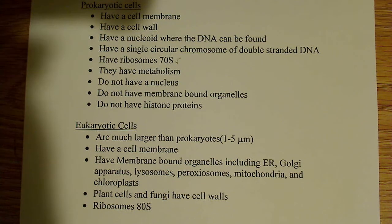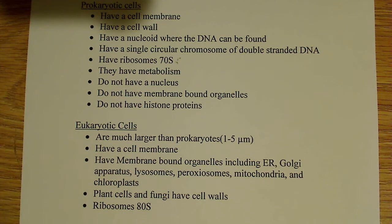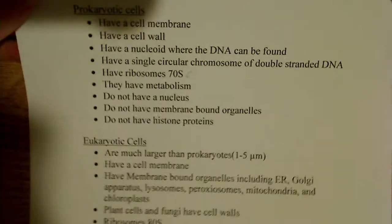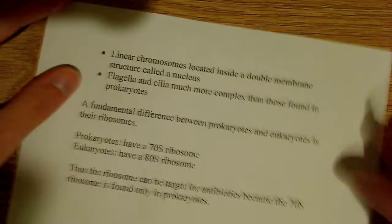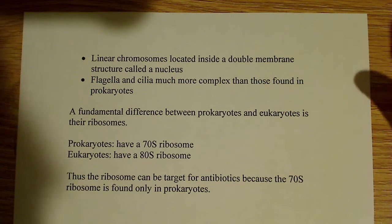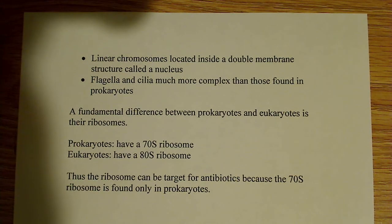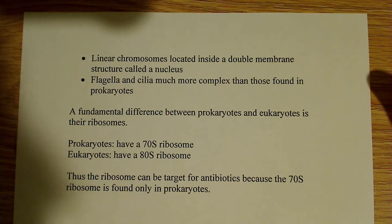Plant cells and fungi also have a cell wall. Eukaryotes have what's known as an 80S ribosome instead of a 70S ribosome — so there's a fundamental difference there. Another fundamental difference is that we see linear chromosomes located inside a double membrane-bound structure called the nucleus. It has pores which allow for the transfer of materials from the nucleus to the cytoplasm.